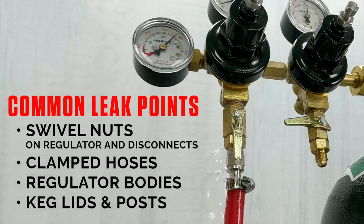Some of the most common leak points are due to swivel nuts on either the regulator and or disconnects, the clamped hoses not being clamped on tight enough, the regulator bodies can have leaks, and sometimes your kegs can have leaks depending on if the o-rings for the keg lid or gaskets are breaking down.